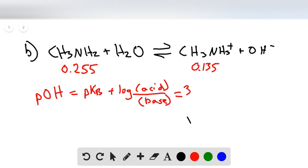So this is the pKb for this molecule, 3.36, plus the log of 0.135 over 0.255. So the pOH here is given as 3.08.